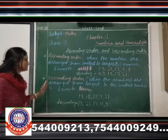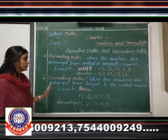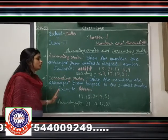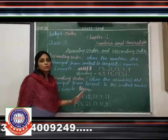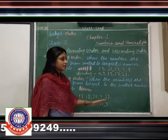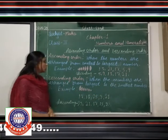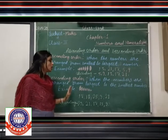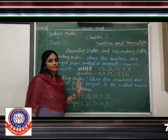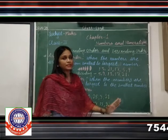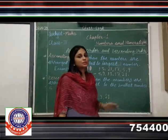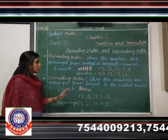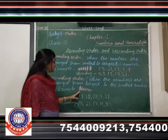The second is descending order. When the numbers are arranged from the largest to the smallest, that is called descending order.